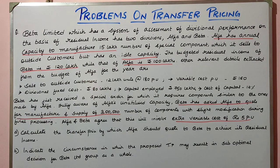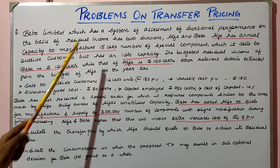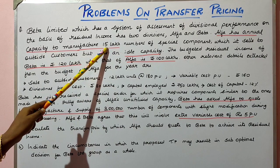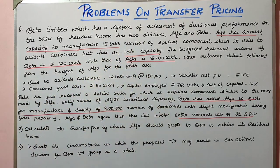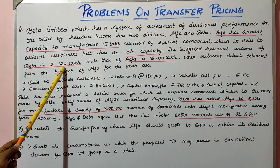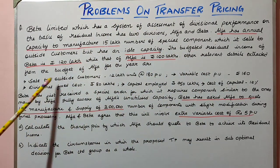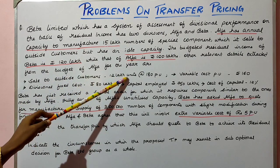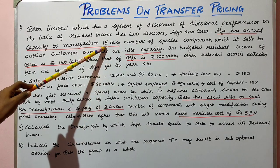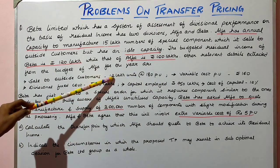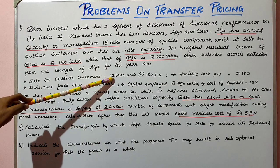What is given in the question: there is a company termed Beta Limited, and it has two divisions — Alpha and Beta. The annual capacity of Alpha is 15 lakhs, and Alpha has idle capacity, meaning all 15 lakhs produced by Alpha is not sold in the market. It is selling only 12 lakhs to outside customers, so 3 lakhs is the idle capacity of Alpha.